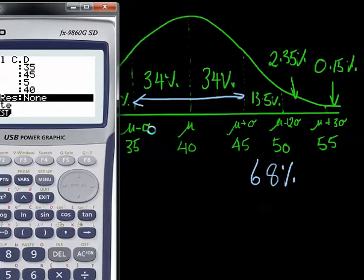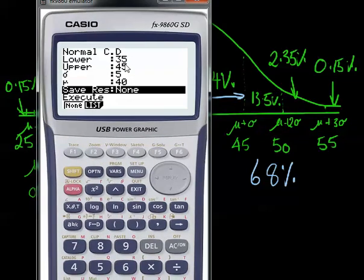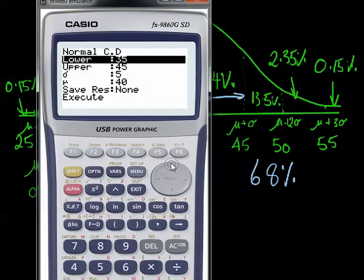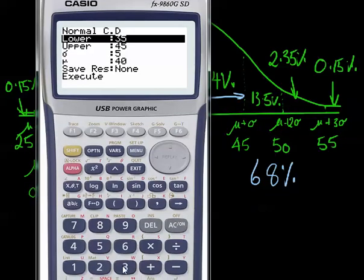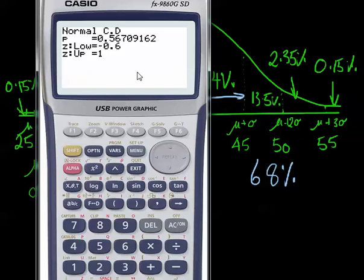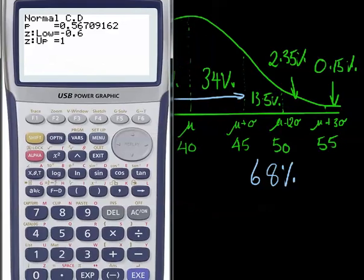We could look at the percentage of data that's sitting between let's say 37 and 45. So all we have to do here is change this lower boundary to 37. Say 37 and we'll hit execute twice. We end up and we can see that we've got 56.7% of the data is sitting there between those two values.